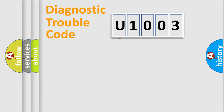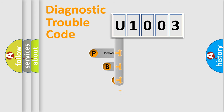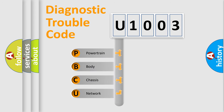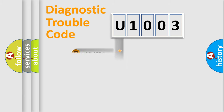First, let's look at the history of diagnostic fault code composition according to the OBD2 protocol, which is unified for all automakers since 2000. We divide the electric system of an automobile into four basic units: Powertrain, Body, Chassis, and Network. This distribution is defined in the first character of the code.